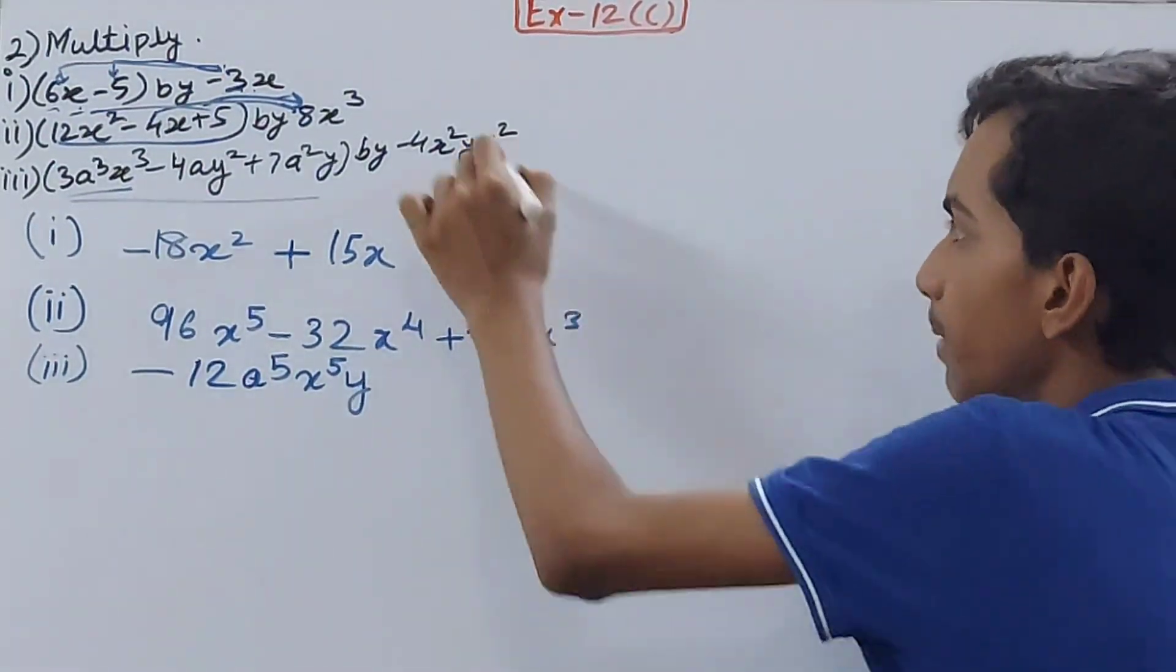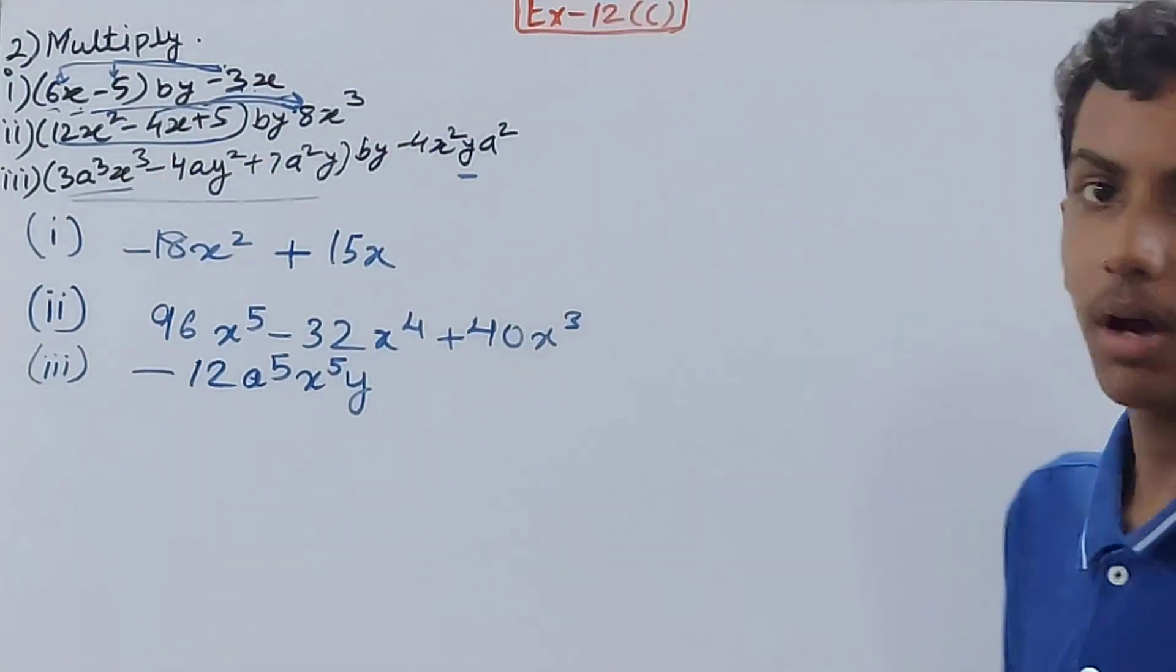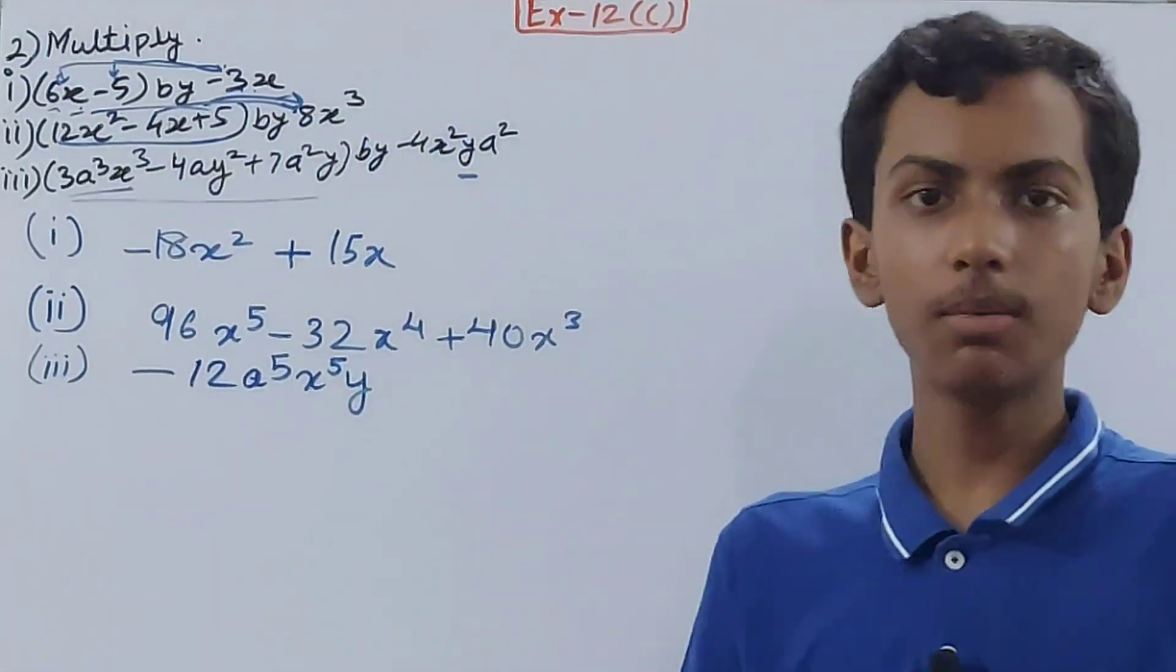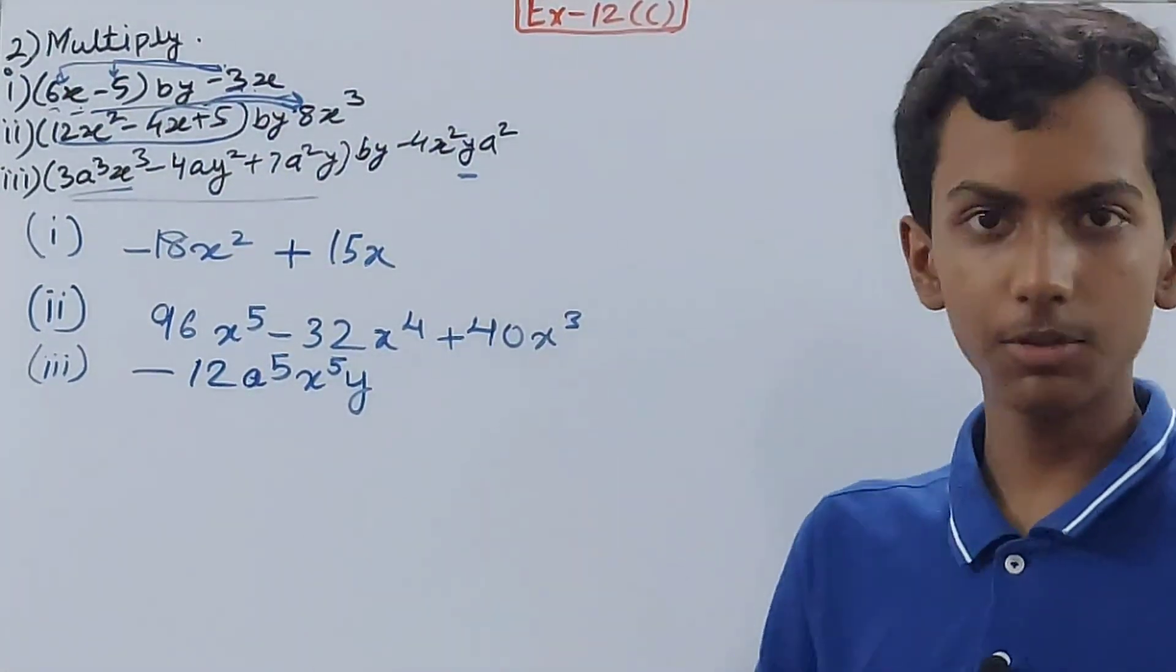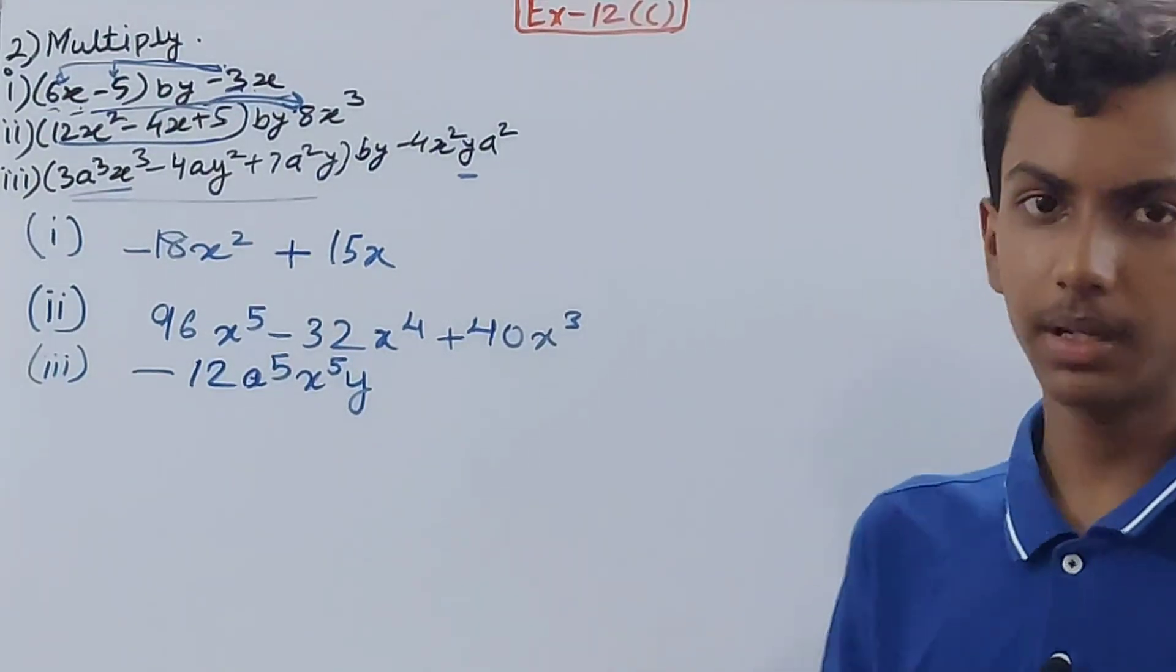Then -4ay². Same thing: -4 into -4 is plus 16.